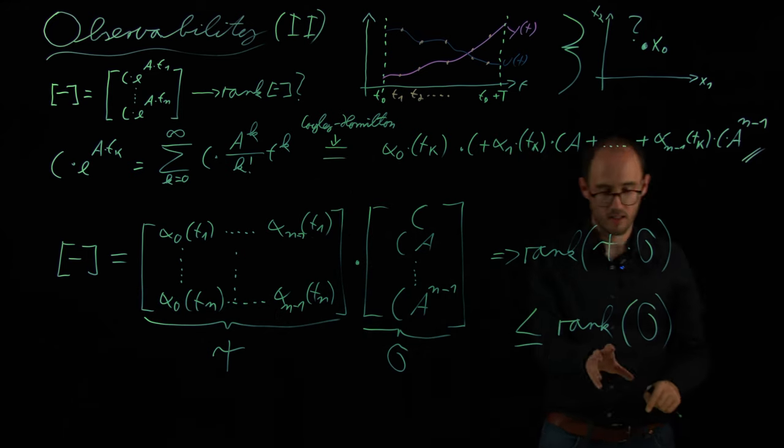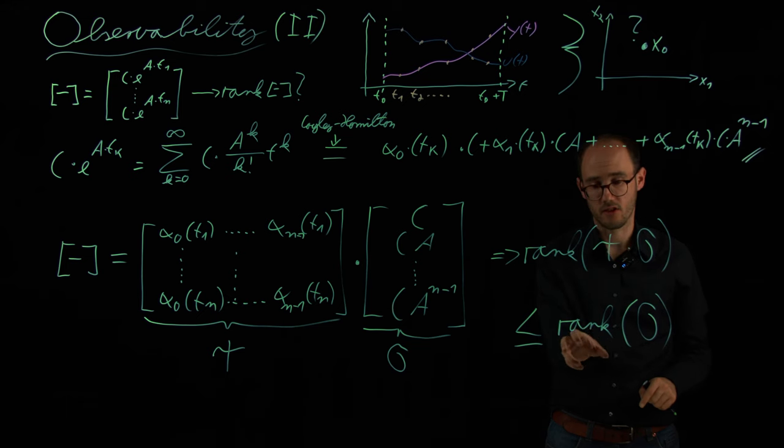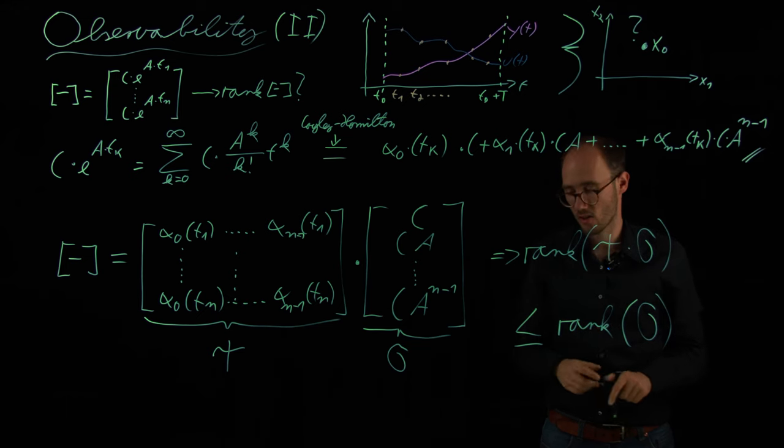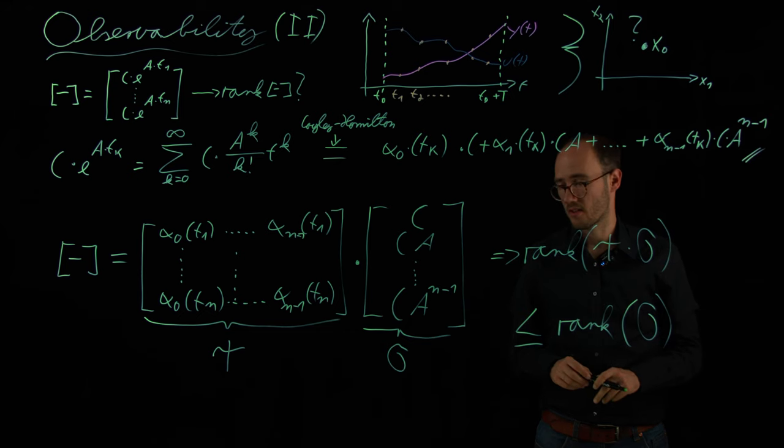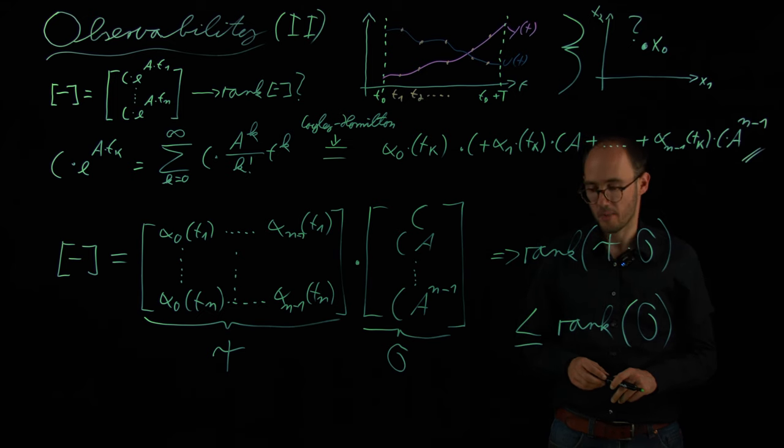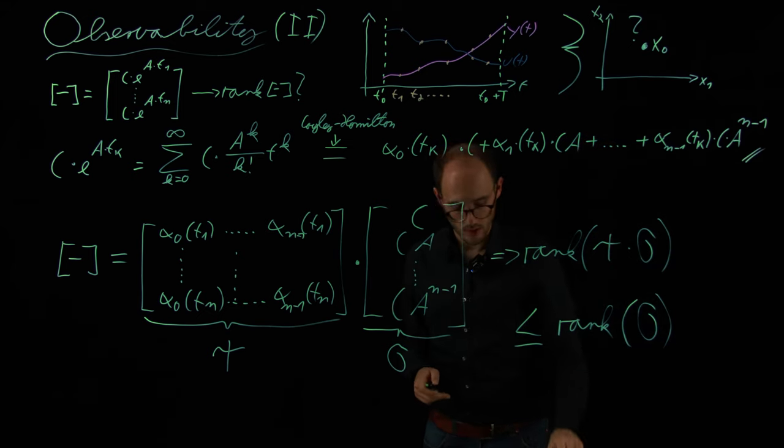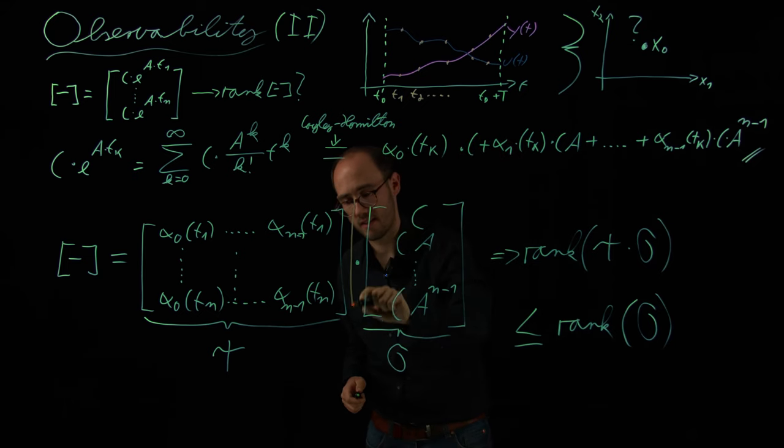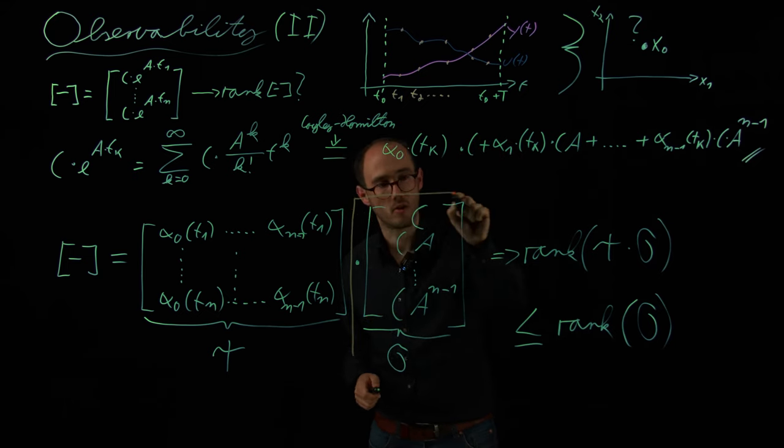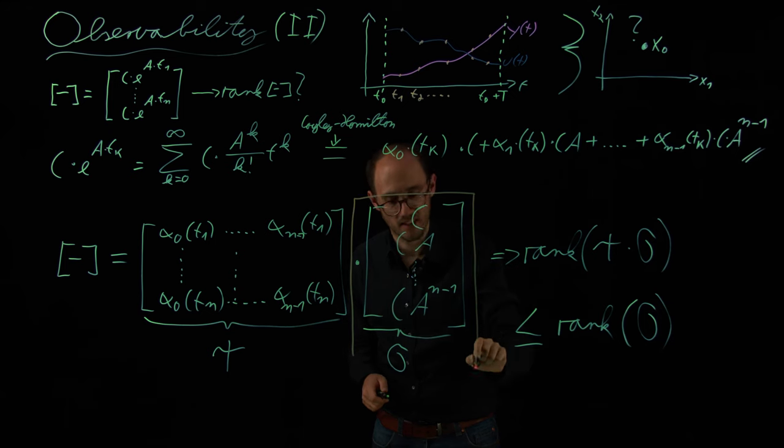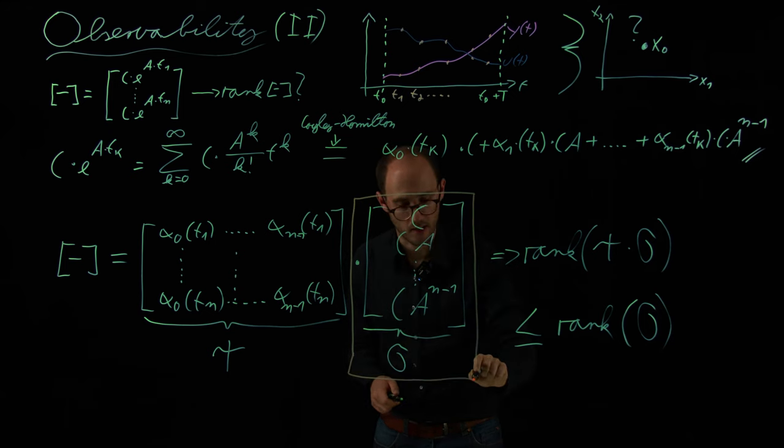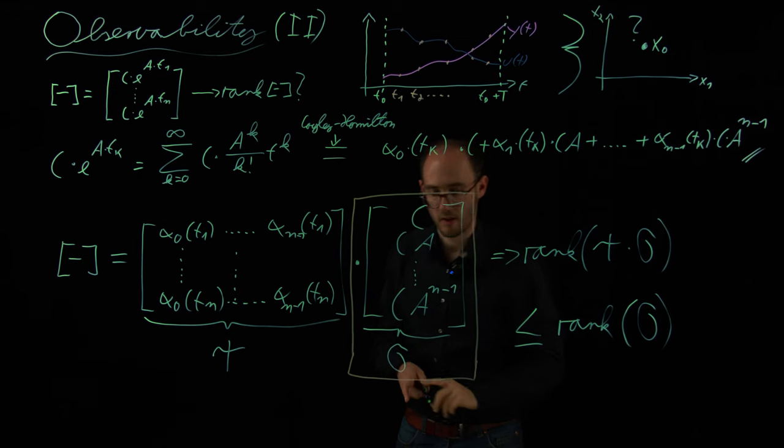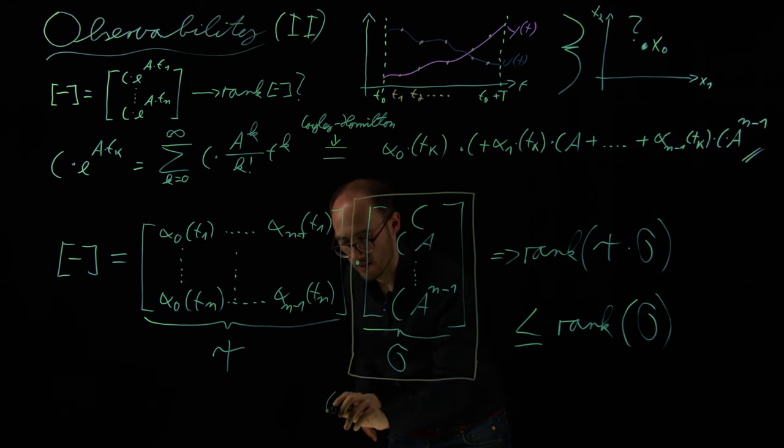This is not a sufficient condition, this is actually just a necessary condition. We will not go through the full proof here due to time constraint. But the basic outcome of this evaluation is that the only important part in order to evaluate if the system is observable or not is this matrix, the big O matrix, and actually, we call this the observability matrix.